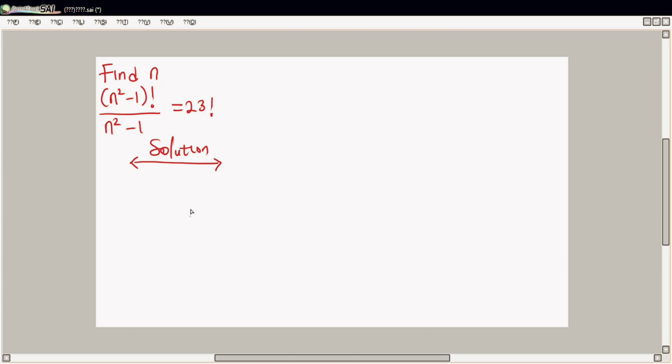All right, we want to solve this particular equation. It's a factorial equation. One beautiful thing about factorial is that it has a lot of relationships. Now we are going to solve this in a very simple way.